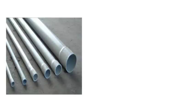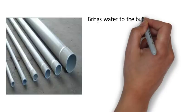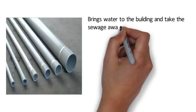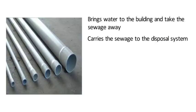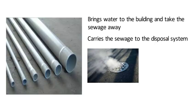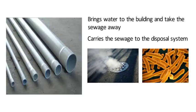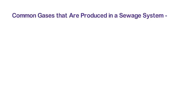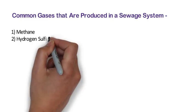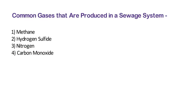Plumbing consists of pipes which bring water to the building and take the sewage away. The sewer pipe is the pipe which carries the sewage to the disposal system. Sewer gas is formed in the natural breakdown of solids in waste water due to the activity of bacteria. Sewer gas may not only have an offensive odor, it may include methane which is potentially combustible. Common gases produced in a sewage system are methane, hydrogen sulfide, nitrogen and carbon monoxide.